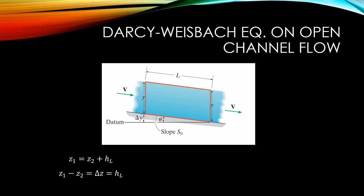We can call the change in elevations delta z. In the image, which I got from Hibbler's book, they call it delta y. The right triangle formed between the datum and the channel bottom can be analyzed as follows: the change in elevation delta z can be taken to be equal to the length of the channel bottom times the sine of the angle of inclination. We can define the longitudinal slope S, or S-naught in the figure, as the change between the elevation and the horizontal direction, delta z over delta x. Looking at this right triangle, we see that delta z over delta x is also equal to the tangent of the angle of inclination.